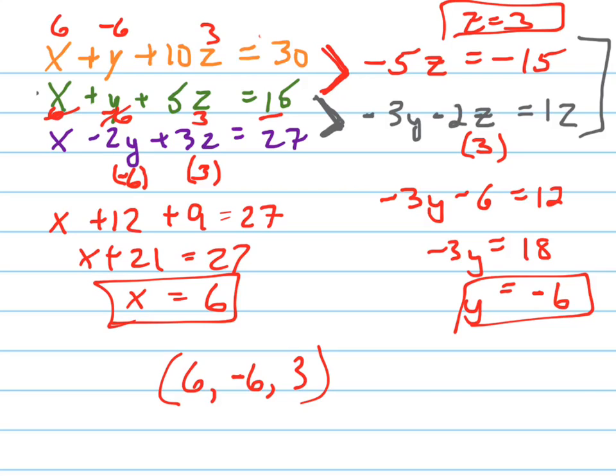Again, this was an easier example, because we got a z right away. You don't usually get lucky, but that's the process for solving systems of three equations with three variables.